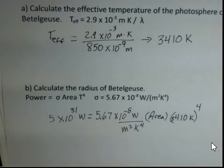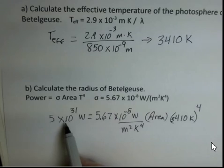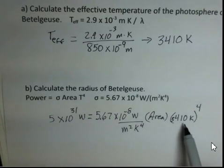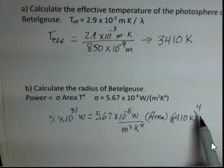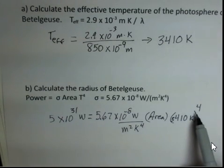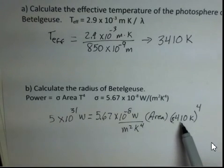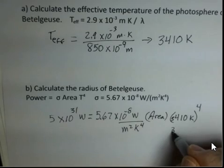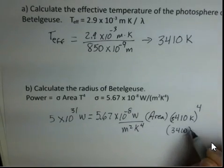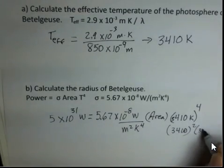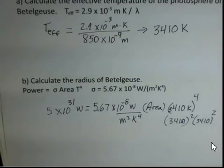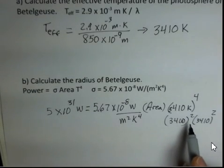So first, the area. You're going to take this number, divide by Stefan's constant, divide by 3410 raised to the fourth power. If you don't have the ability on your calculator to do a fourth power directly, then just square this number twice. I'll just write that out here, 3410 squared times 3410 squared. That's the same thing as 3410 to the fourth power. So most calculators would have the square capability.